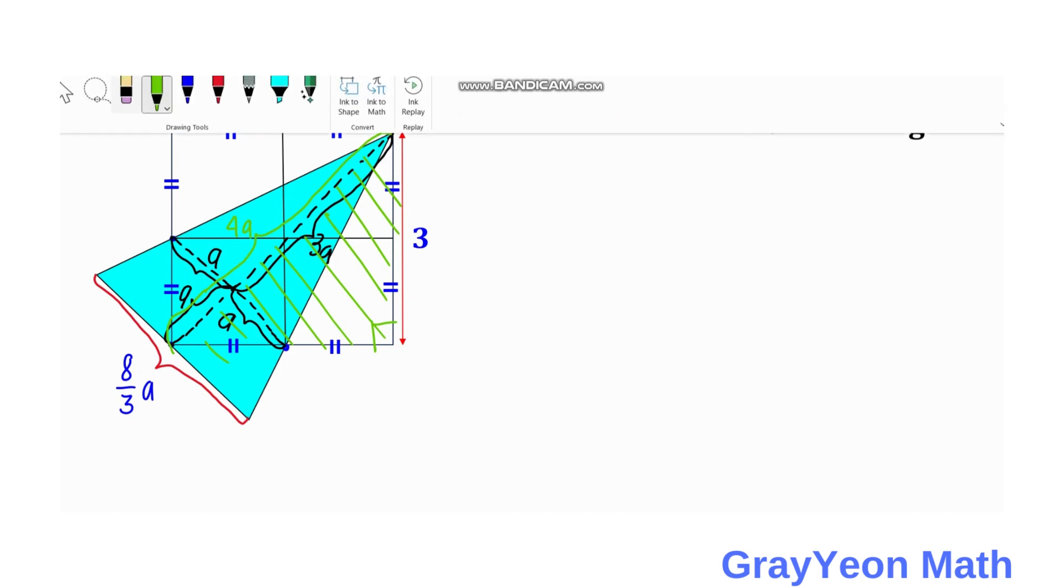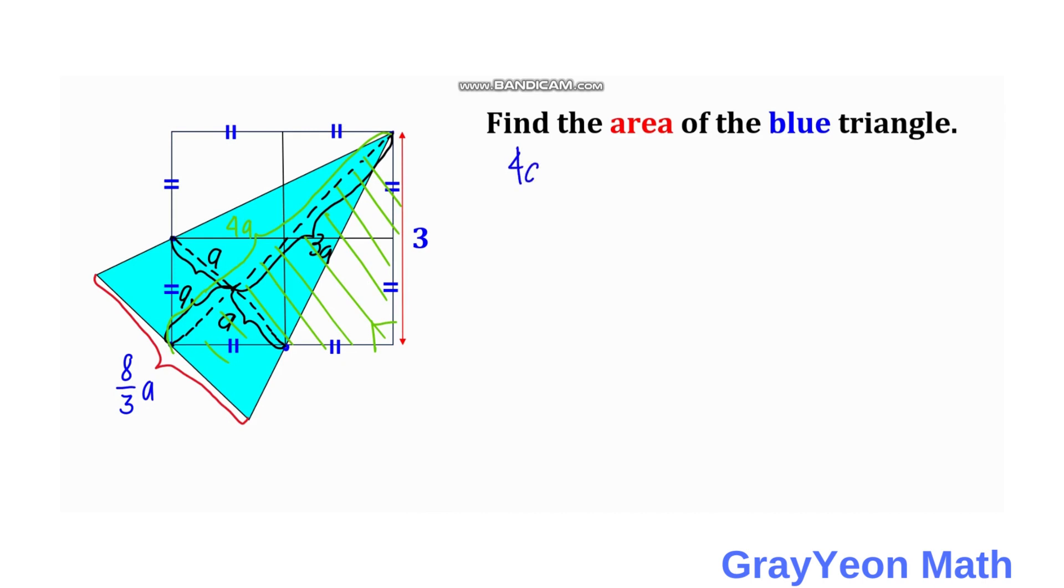Okay, and if that is the hypotenuse then 4a is actually square root of 2 times the side, so 4a is equal to square root of 2 times 3, and a is equal to 3 over 4 square root of 2.